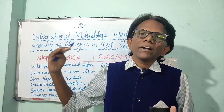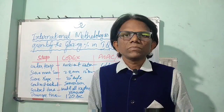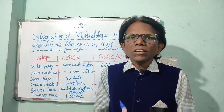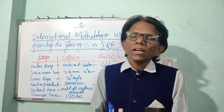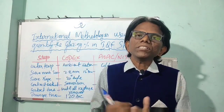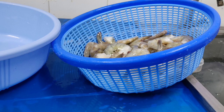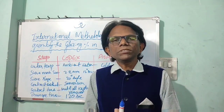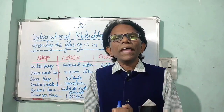The Codex method checks the deglazed weight of the shrimps to quantify glazing percentage in IQF frozen shrimps. First we need equipment: a calibrated balance with calibrated weights, a receiving pan, and a drain mesh sieve. In the AOAC method, an 8-inch mesh sieve is standard, but this has been amended to a 12-inch diameter mesh sieve, which is advisable when checking glazing percentage for more than 1 lb of IQF frozen shrimps.